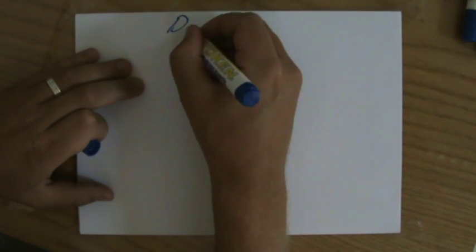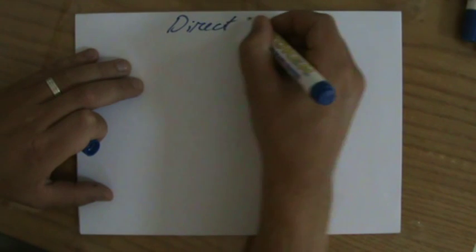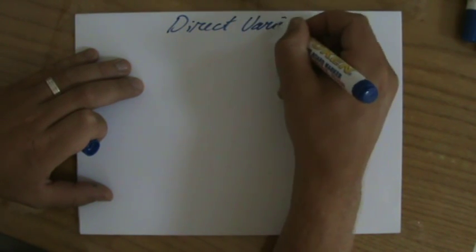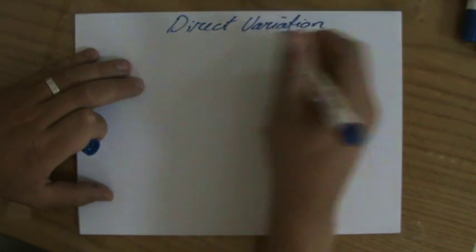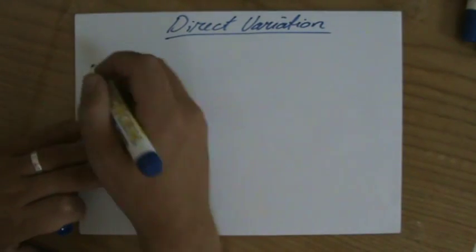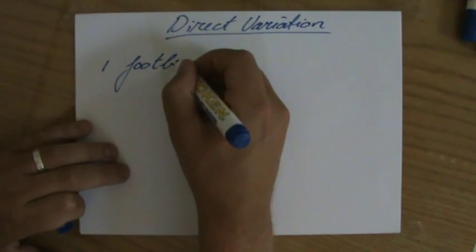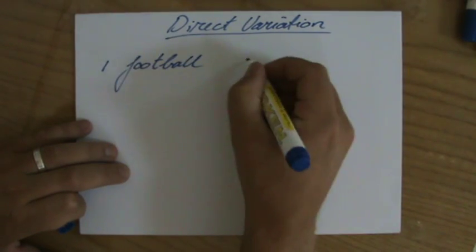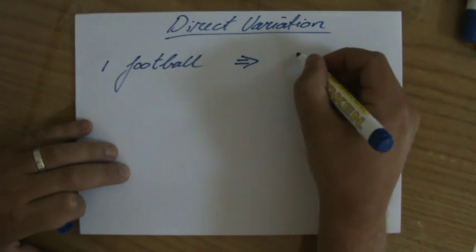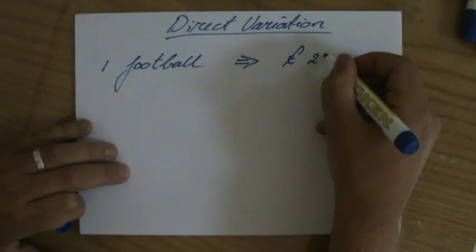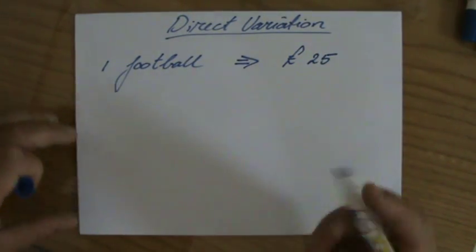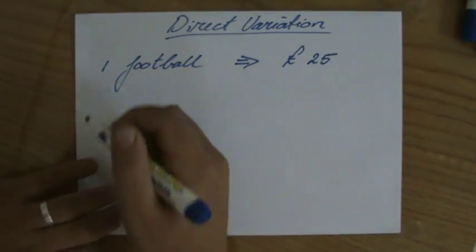I'd like to use an example. When you are going to the supermarket to buy a football, let's say you want to buy one football. You go to the store and you see that one football is going to cost you, I don't know, 25 pounds. But you decide to buy a few more footballs.